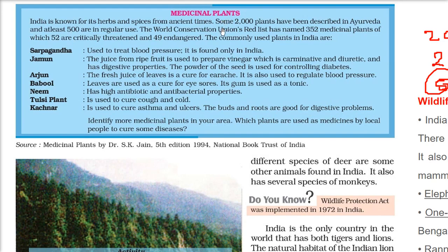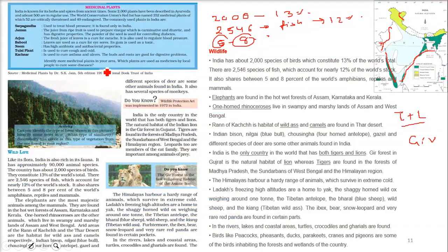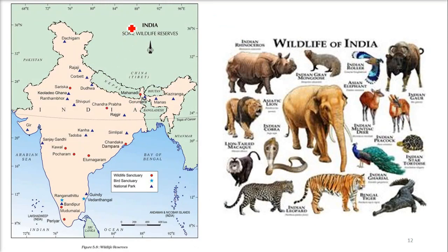These plants are so important for us — for our existence, they have all medicinal values. But still we are eager to cut them. These are the places of wildlife normally found in India — elephants, Indian great mongoose, deer, peacock, tortoise, gharials, lion, tiger, leopard — every variety we have.